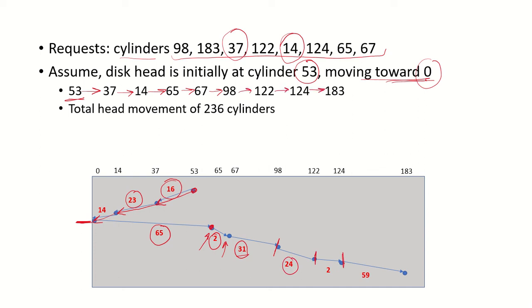Then next is 98, which is 31 cylinders, then 122, then 124. It keeps on moving and then lastly 183. If there are any more cylinders to reach the center of the disk, it will cover those before it will reverse again.